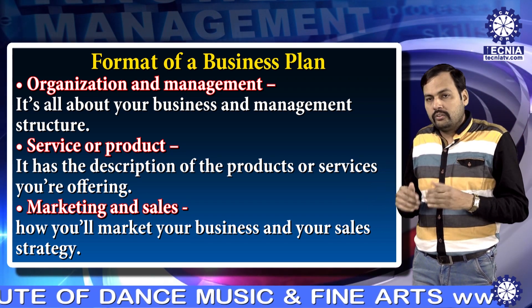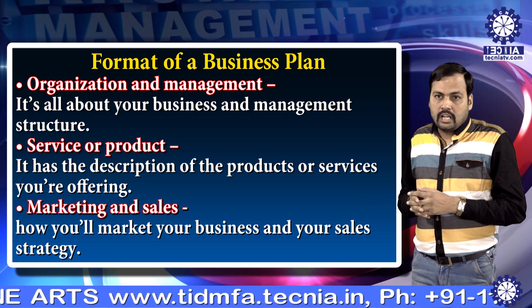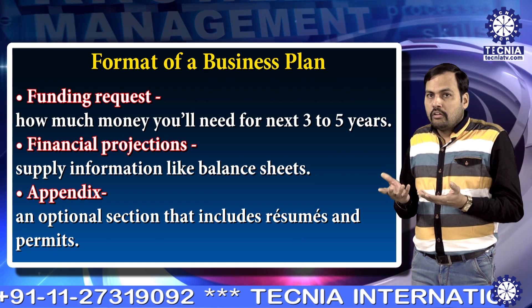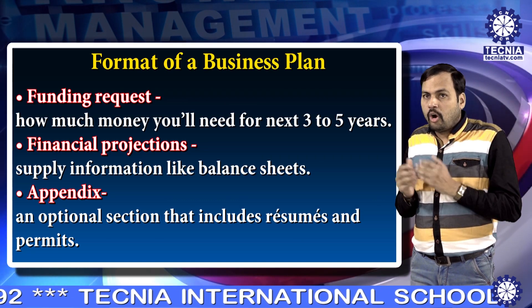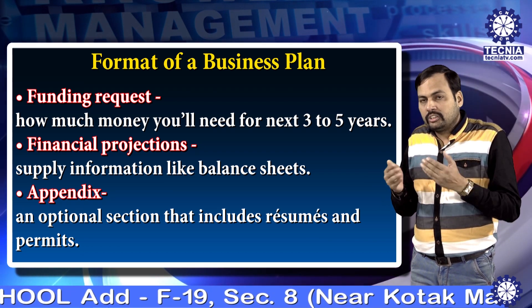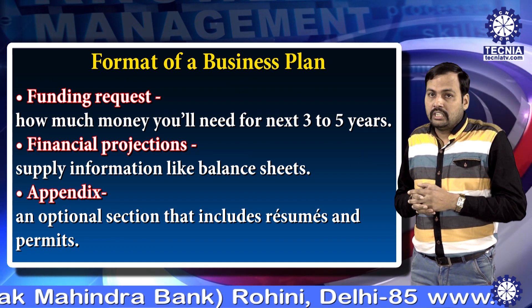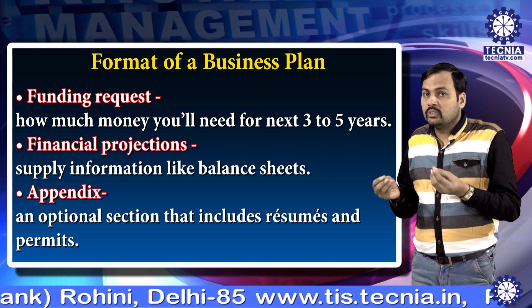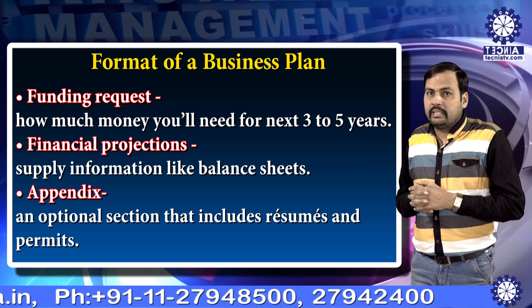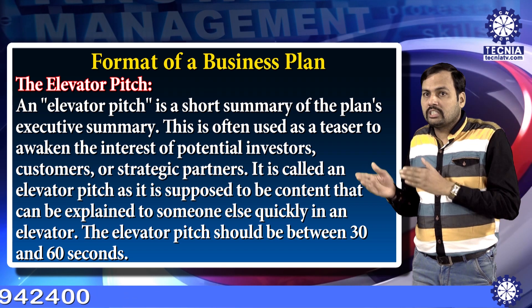Next is Service or Product — a description of the products or services you are offering. Next is Marketing and Sales — how you will market your business and your sales strategy. Next is Funding Request — how much money you will need for the next three to five years. Financial Projections — it includes supply information like balance sheets. The last component is the Appendix — an optional section that includes resumes and permits.